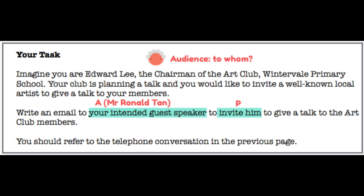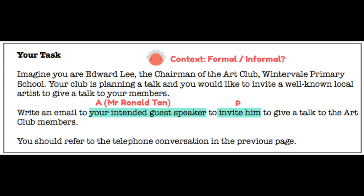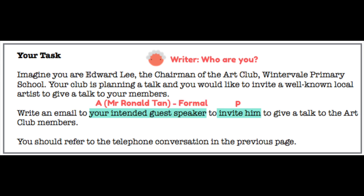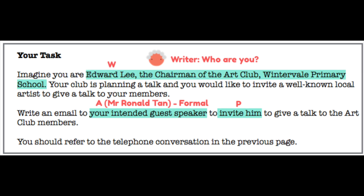Next, you have the Context. Since you are writing to an intended guest speaker who is not someone close to you, quite clearly this will be a formal piece of writing. Finally, the W — who is the Writer today? From the first paragraph, you are Edward Lee, the chairman of the Art Club, Winterville Primary School. Highlight that and label it W.